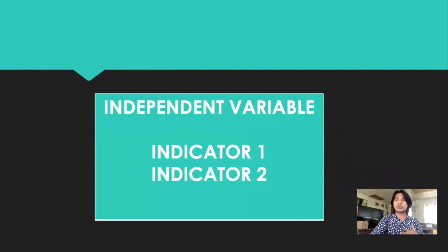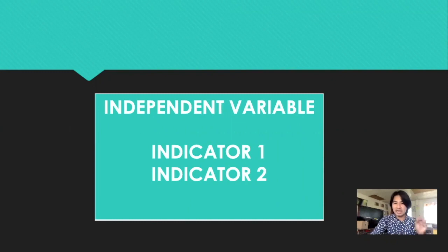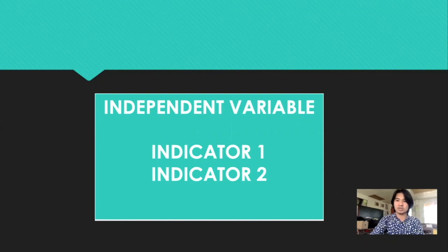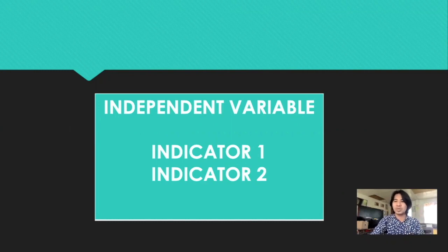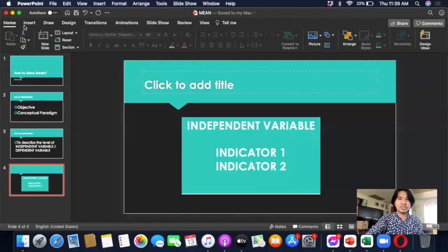We need to remember our independent or dependent variable. My example here is the independent variable and its indicators. I have indicator one and indicator two, depending on your variable. If you have indicator one to five, or indicator one to twenty, that's the thing we need to remember.